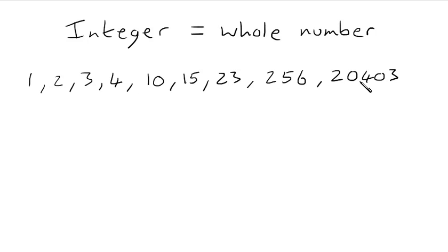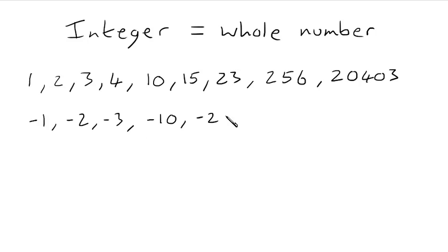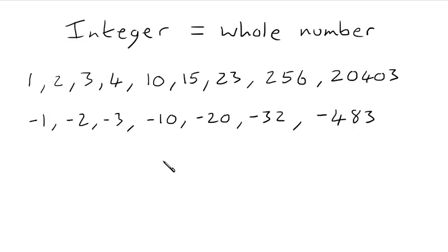We can also have integers that are negative — negative whole numbers. So negative 1 is an integer, negative 2, negative 3, and so on. So negative 10, negative 20, negative 32, negative 400 — all of those are integers; they are negative integers, negative whole numbers. There's one other integer we haven't talked about, and that is 0. So 0 is also an integer, even though it's neither positive nor negative.